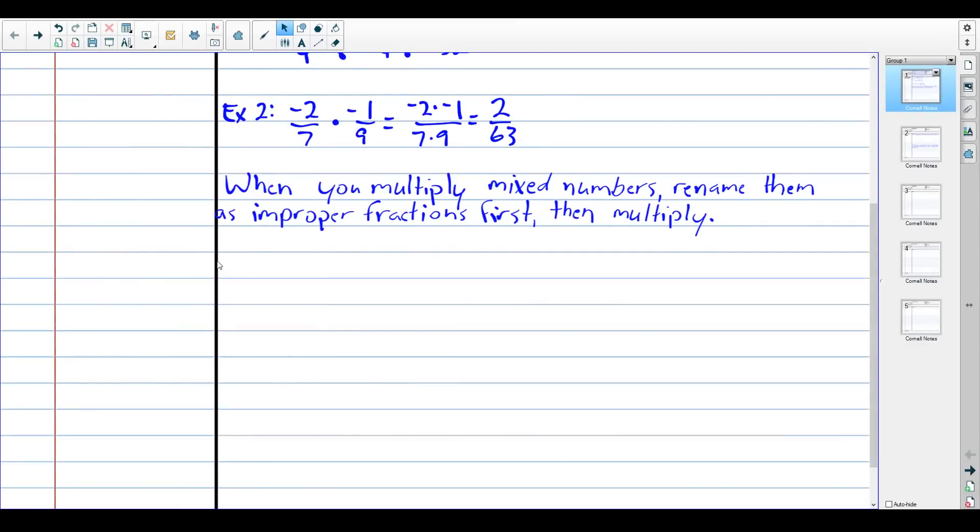Example three: one half times four and two thirds. There's no clever way to get around doing this. You have to make mixed numbers into improper fractions. So one half you leave alone. Four and two thirds: four times three is twelve plus two is fourteen. So this is fourteen over three.